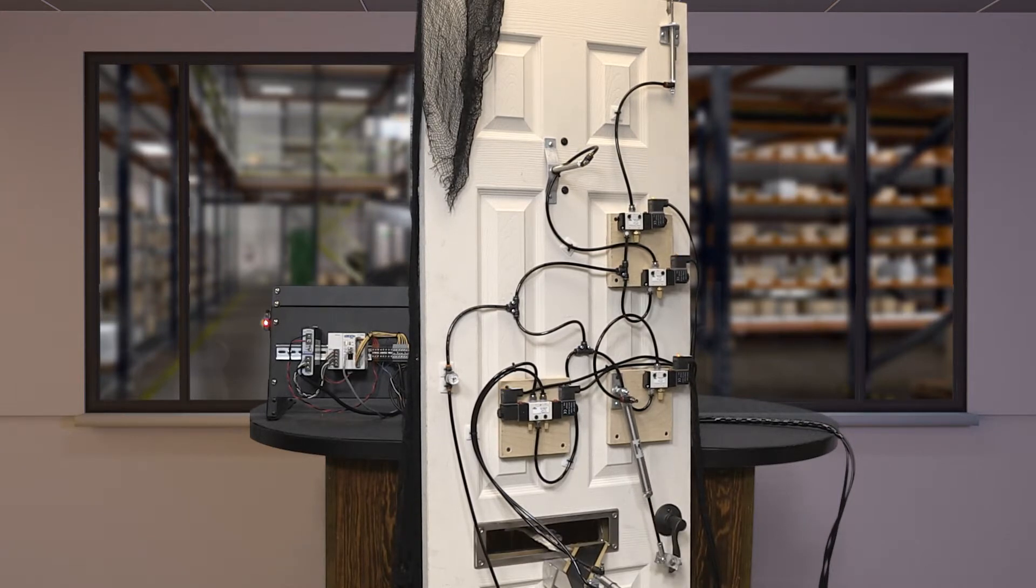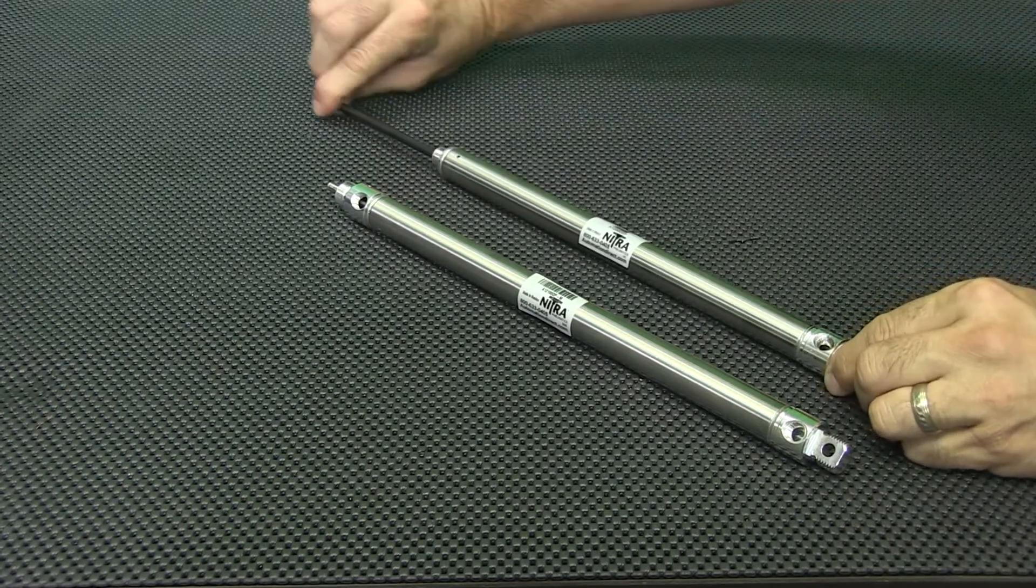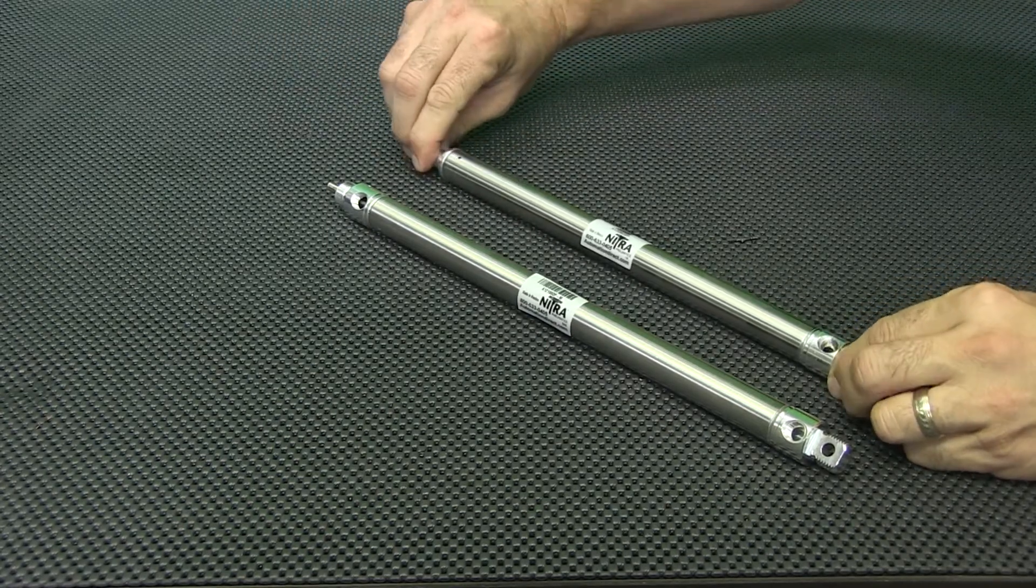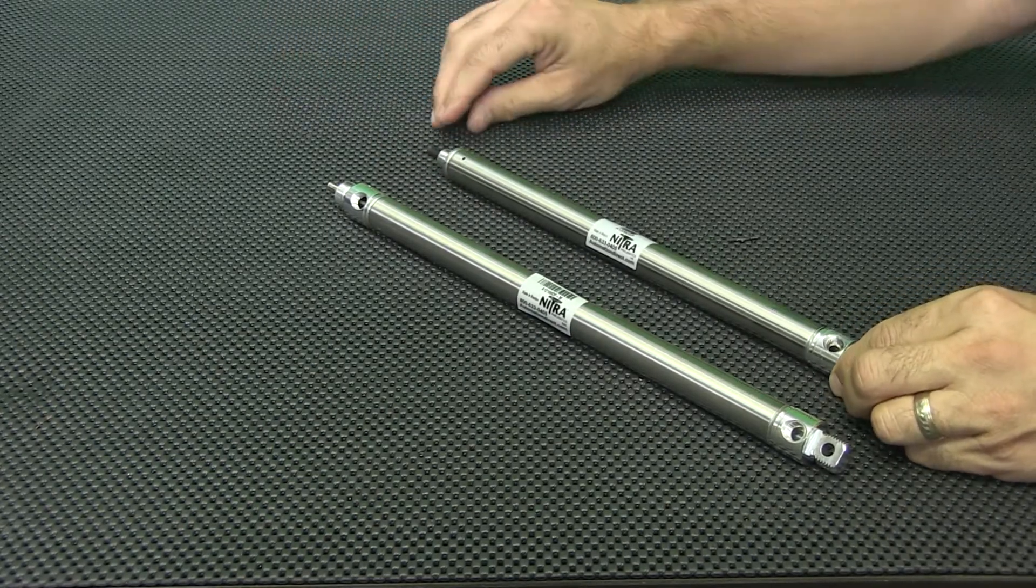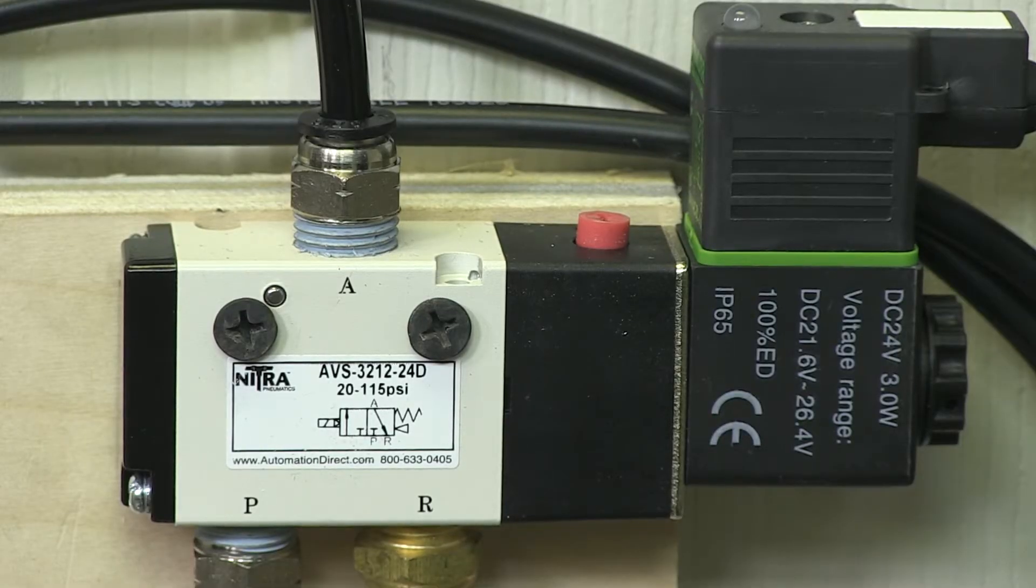The cylinders that control the door knob, the door knocker, and the slide lock are all spring return style. By using the spring return cylinders, we only need to plumb one side of the cylinder and we can use a simple one-way valve like this one.